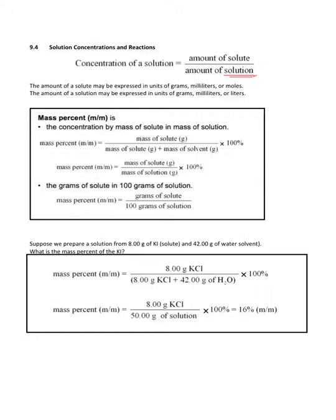The first way we're going to talk about is mass percent — the concentration by mass of a solute in the mass of solution. It is the mass of the solute in grams divided by the mass of the solute plus the mass of the solvent, times 100. So: mass of solute divided by mass of solution, keeping in mind that the bottom is solute plus solvent.